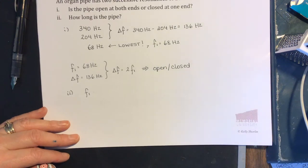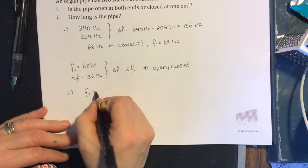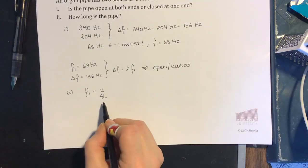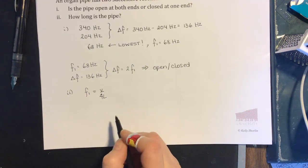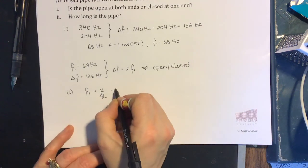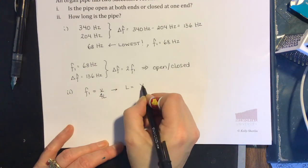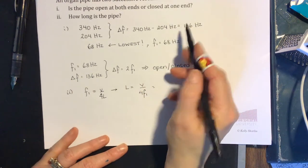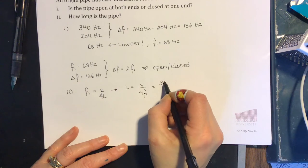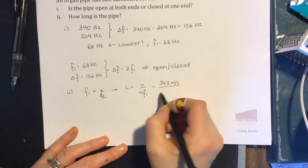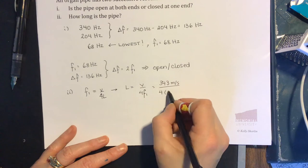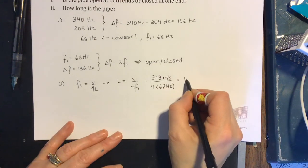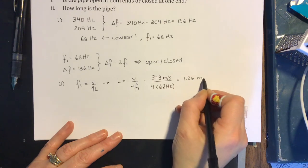F1 is equal to V divided by 4 times L. We use 4 times L because the pipe is open at one end and closed at the other. That means the length of our pipe is V divided by 4 times F1. It doesn't say anything about the air, so we'll assume the speed is 343 meters per second. We'll divide that by 4 times the fundamental frequency of 68 hertz, and we get a length of 1.26 meters, which is about right for the size of an organ pipe.